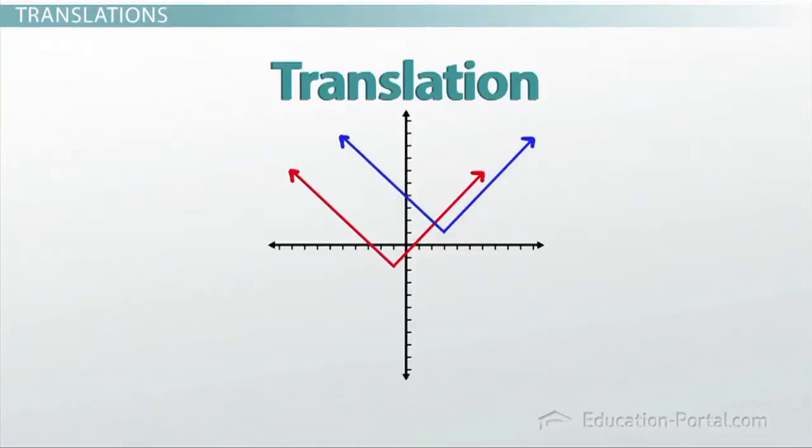So the question becomes, how do you accomplish this translation? How would you take this function and change it into this one? Well, the translation I've shown you here is working in two ways. It's shifting the function up and to the right. So let's look at those shifts one at a time.